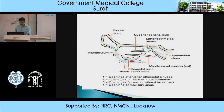Above the middle turbinate, in the superior meatus, there are openings of the posterior ethmoidal air cells. Just anterior to the sphenoid sinus is the spheno-ethmoidal recess, where the sphenoid sinus opens. To summarize: in the middle meatus (the ostiomeatal complex), there are openings of the frontal sinus, anterior ethmoidal sinus, and maxillary sinus; in the superior meatus, posterior ethmoidal air cells open; and in the spheno-ethmoidal recess, the sphenoid sinus opens.